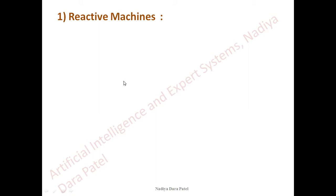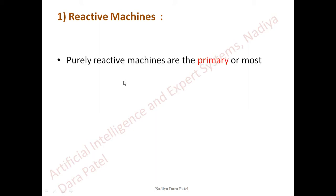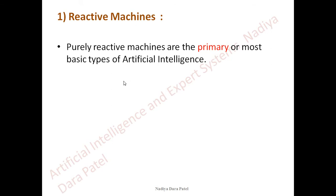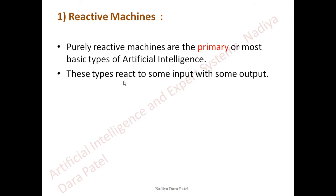When we say machines, it is not just about hardware — it also includes software and applications. The word reactive itself tells you it is something which is going to react. If you give a situation, this device, application, or software is going to react to it. It is purely the most basic or primary type of Artificial Intelligence, the first development, starting with a limited amount of tasks.